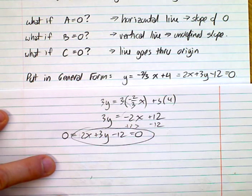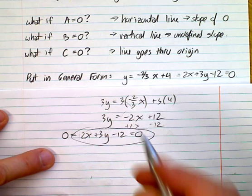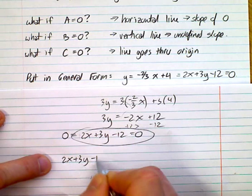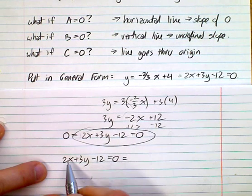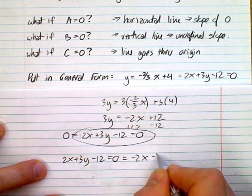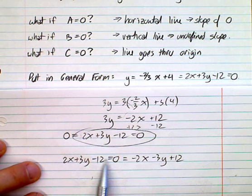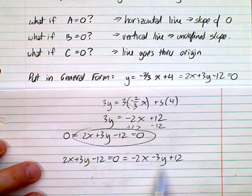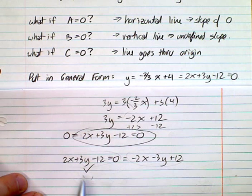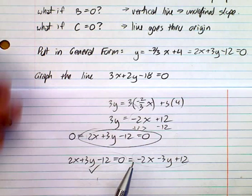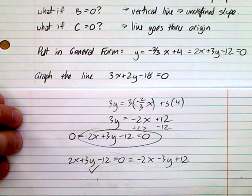One thing to note: it doesn't really matter which side the zero is on — it can appear on either side. Also, if you moved all terms to the other side, all the signs would flip: so negative 2x minus 3y plus 12 equals zero would also be correct, but we want to get used to writing it with a positive x coefficient.